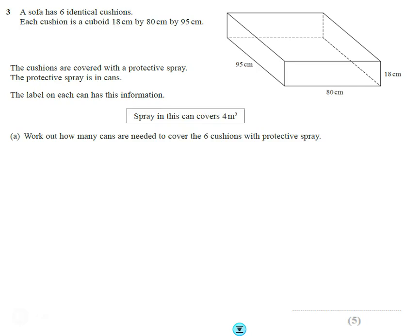Question number three. This is a seven marker. There's five marks here and then we'll move on to the next page and look at the two marks. This is the picture of a sofa cushion. It's modeled as a cuboid with the dimensions on it. The cushions are covered in a protective spray. The protective spray comes in cans and we're going to find out how much it covers. The first thing we need to realize is this is not a volume question, which is what you normally see with a shape like this. Really we want to find the surface area. We want to spray the stuff from the outside.